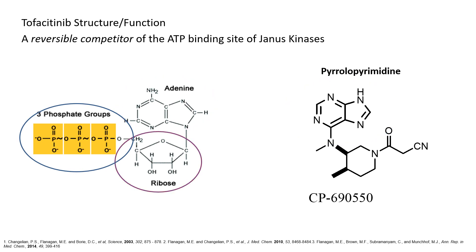When we move to the ribose portion, tofacitinib does not have a sugar. It uses the piperidine series, which was the most optimal series to produce this particular drug. I encourage you to look at the references, especially from Mark Flanagan, on how this discovery happened over more than three years and many nights in the lab working to find the best structure.